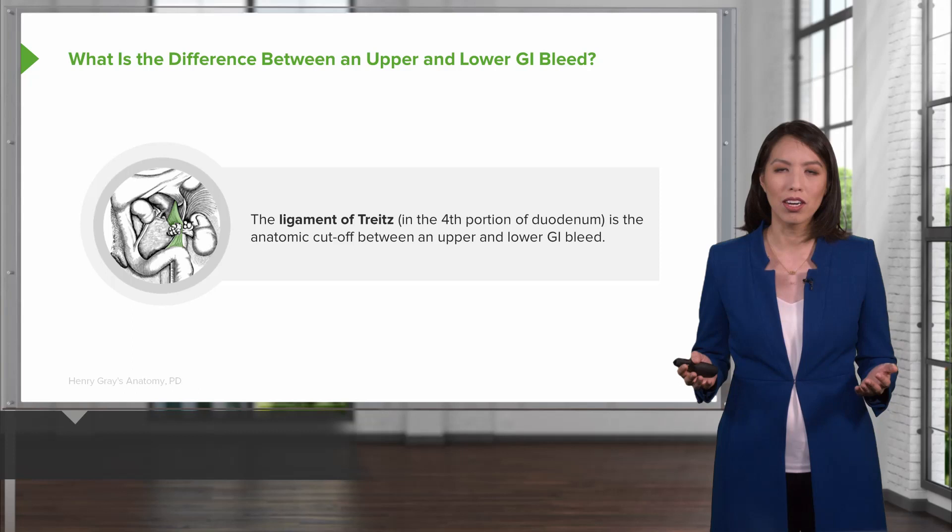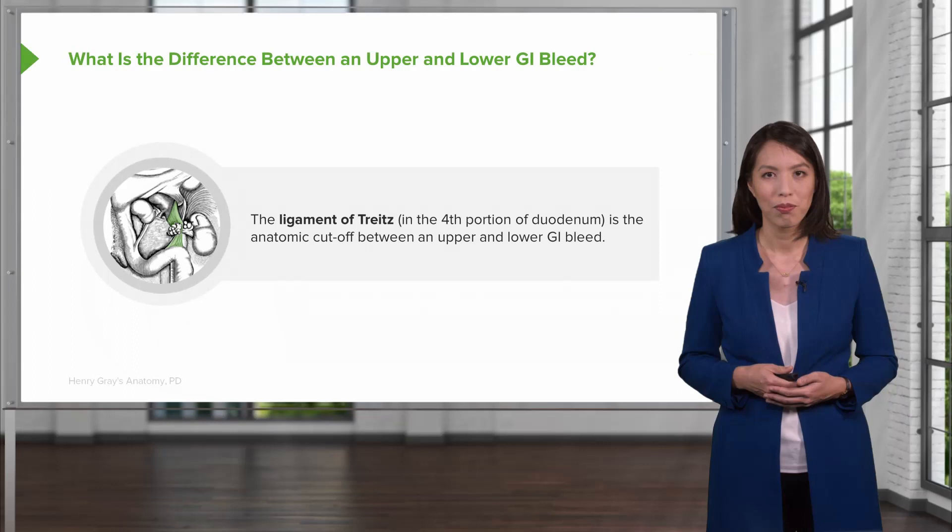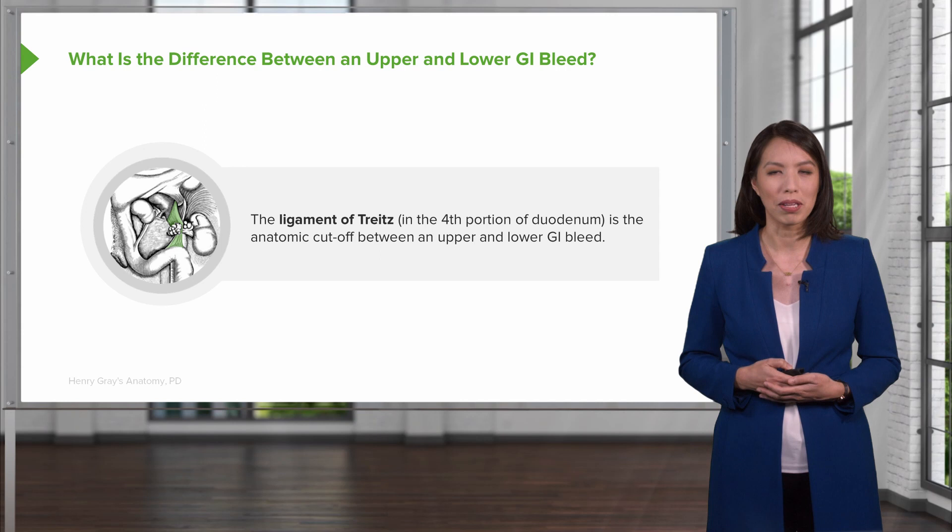Let's talk about gastrointestinal or GI bleeds. The anatomical difference between an upper GI bleed and a lower GI bleed is the cutoff point of the ligament of Treitz, located in the fourth portion of the duodenum. Everything above that is an upper GI bleed and everything below is a lower GI bleed.